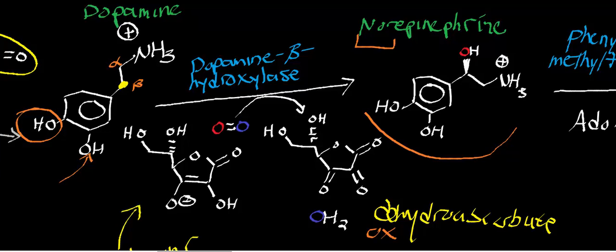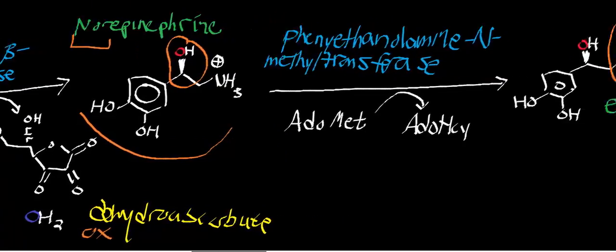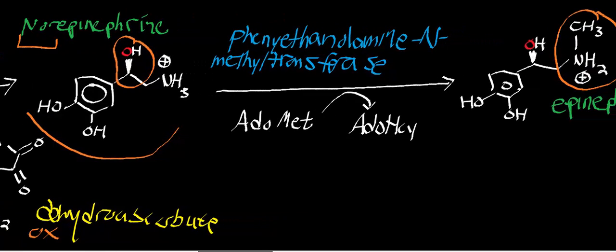That gives you norepinephrine. Notice the difference: norepinephrine has this hydroxyl group on the beta position, whereas dopamine does not. Now let's look at the terminal enzyme in this synthesis — this is called phenylethanolamine N-methyltransferase.